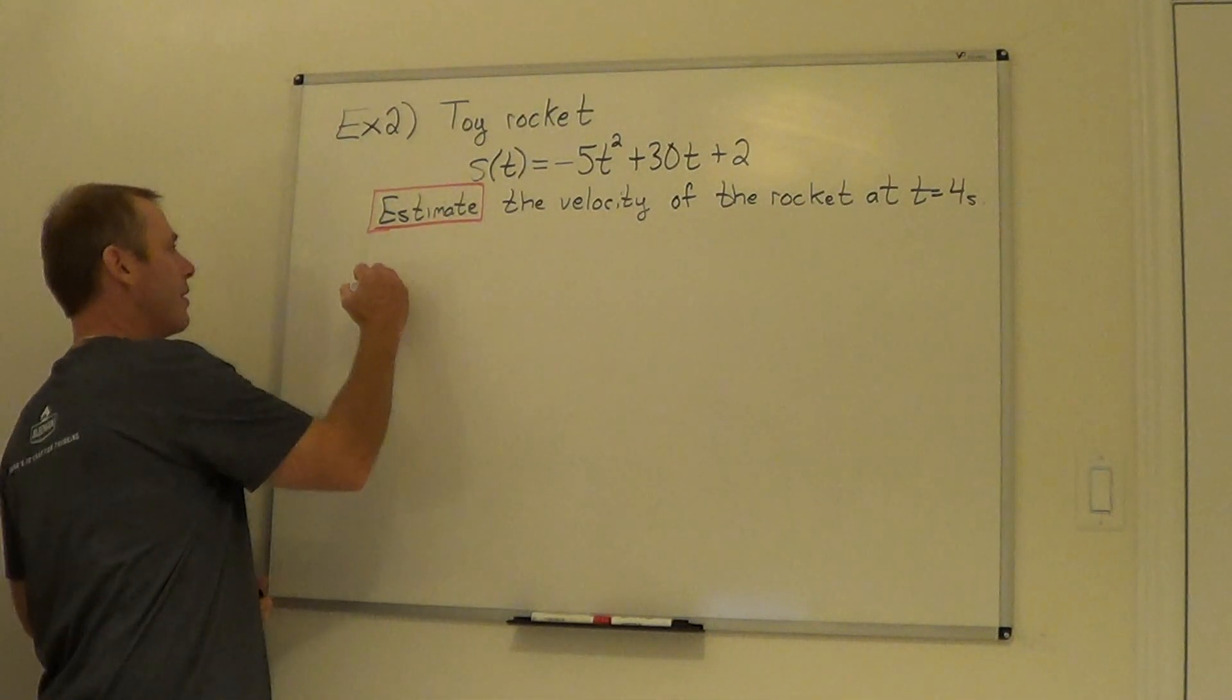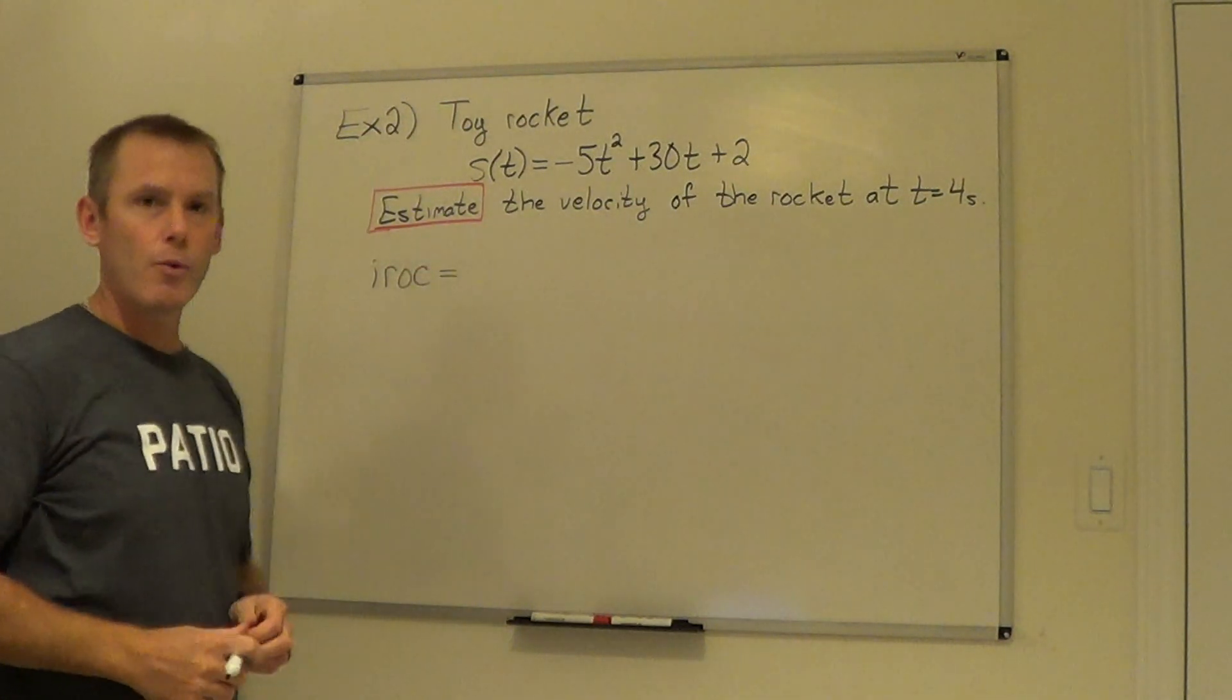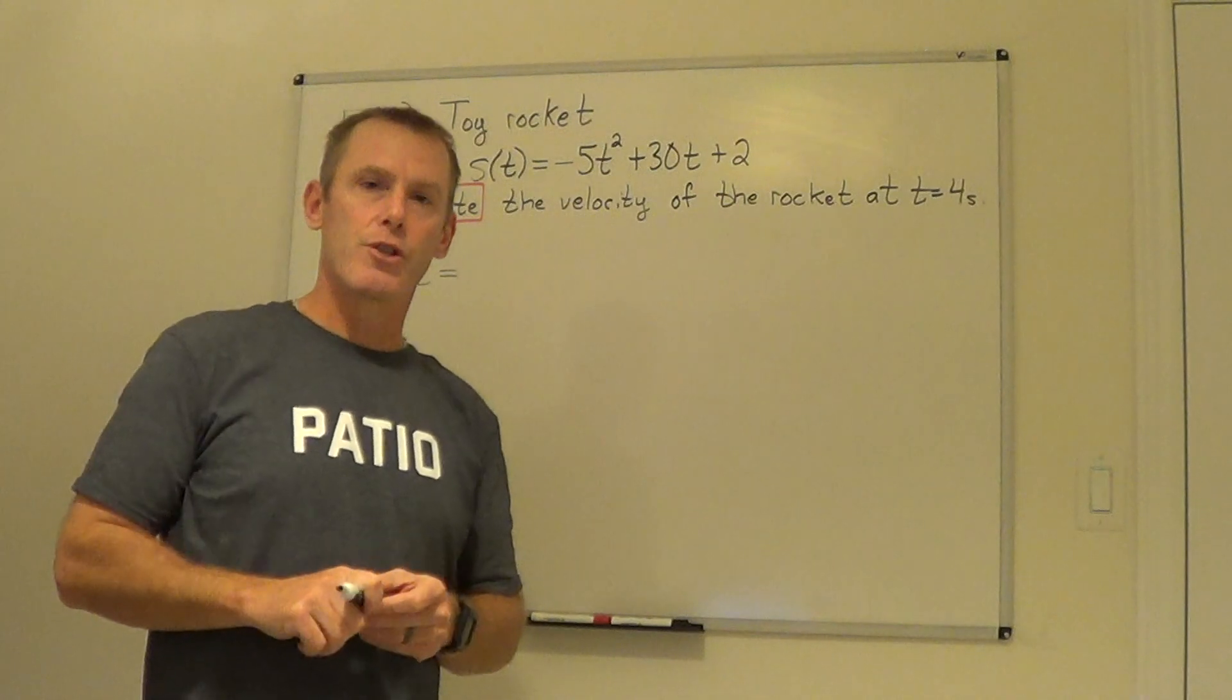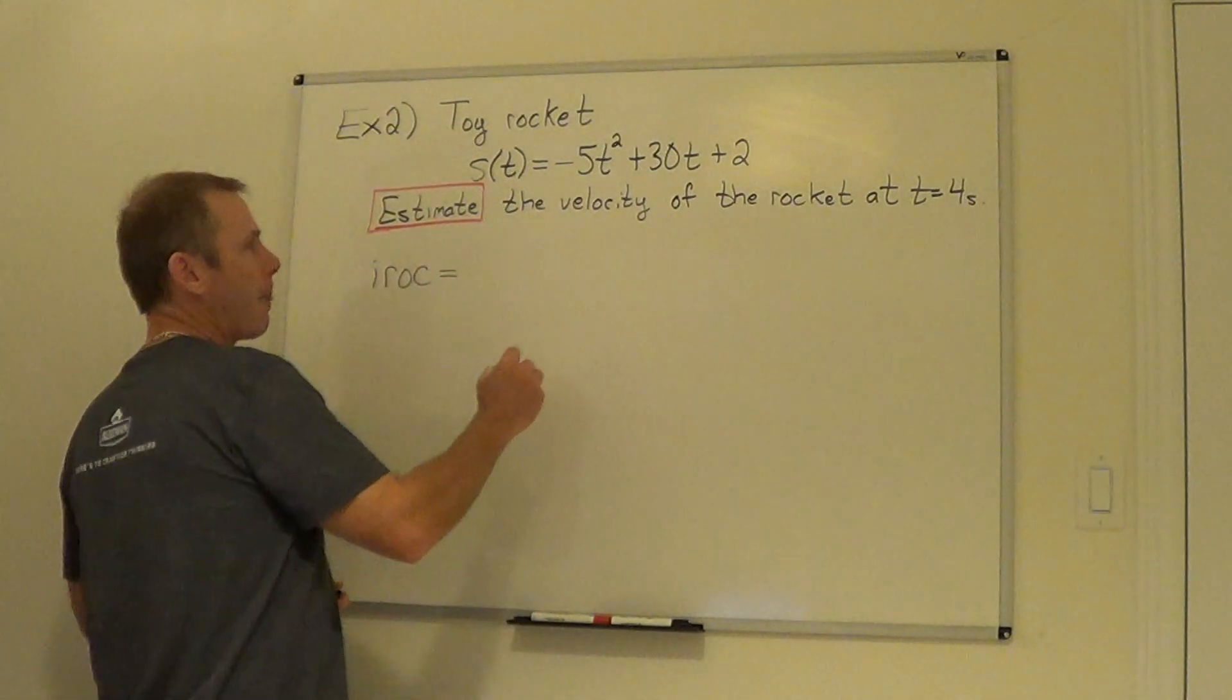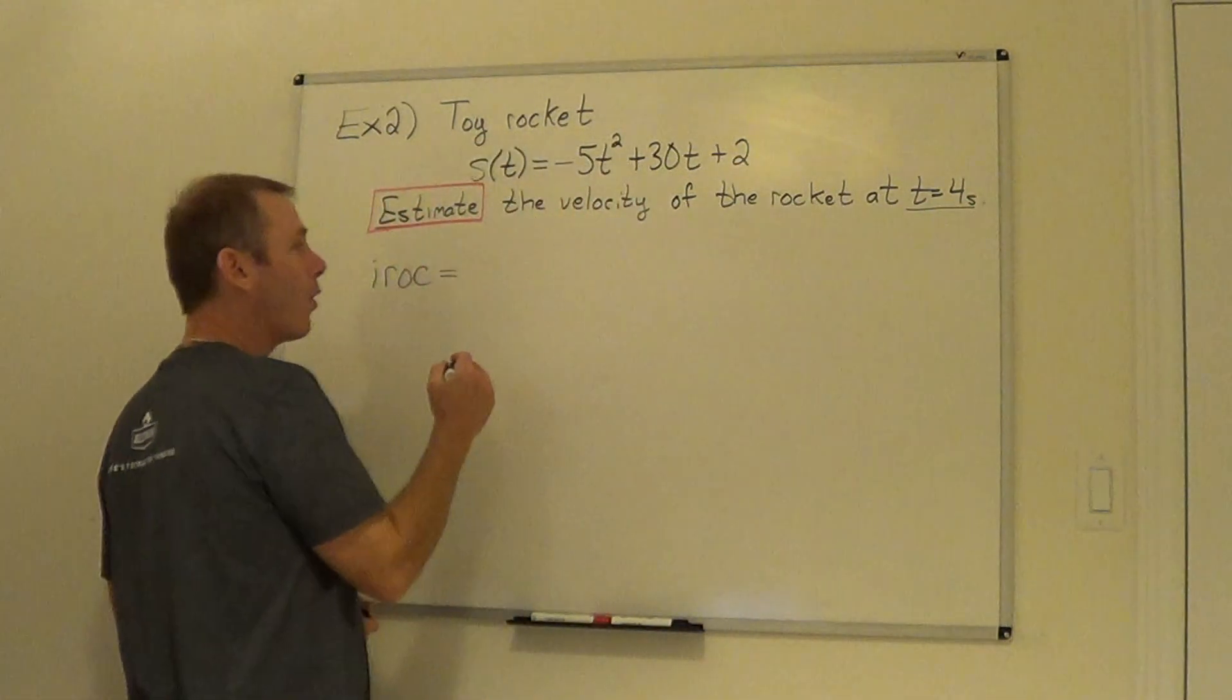Now to find the instantaneous rate of change and to estimate, essentially what I'm going to do is use the slope formula once again but to estimate because in this case, I'm using t equals 4 here.